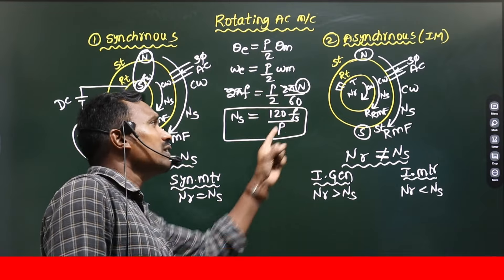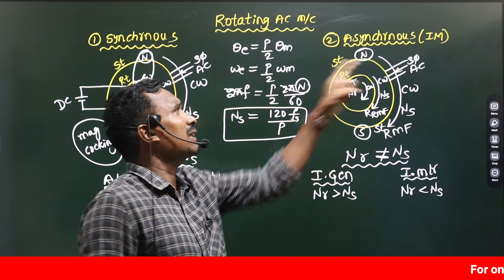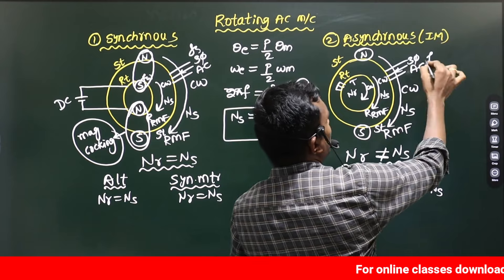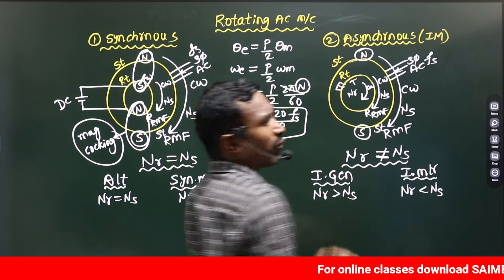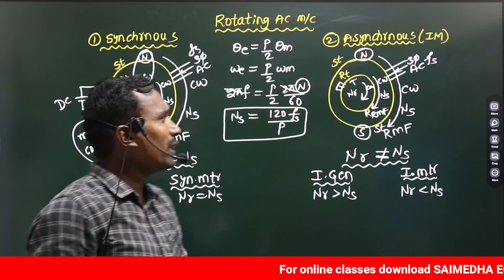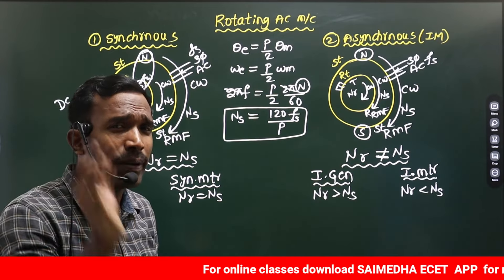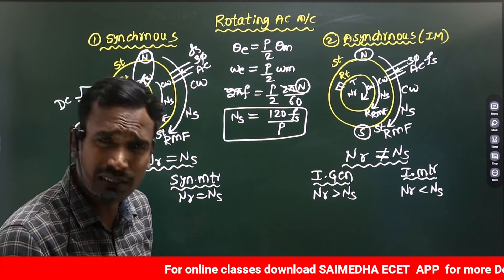So the Synchronous speed formula is Ns = 120F/P, where F is the supply frequency (also called stator frequency) and P is the number of poles.